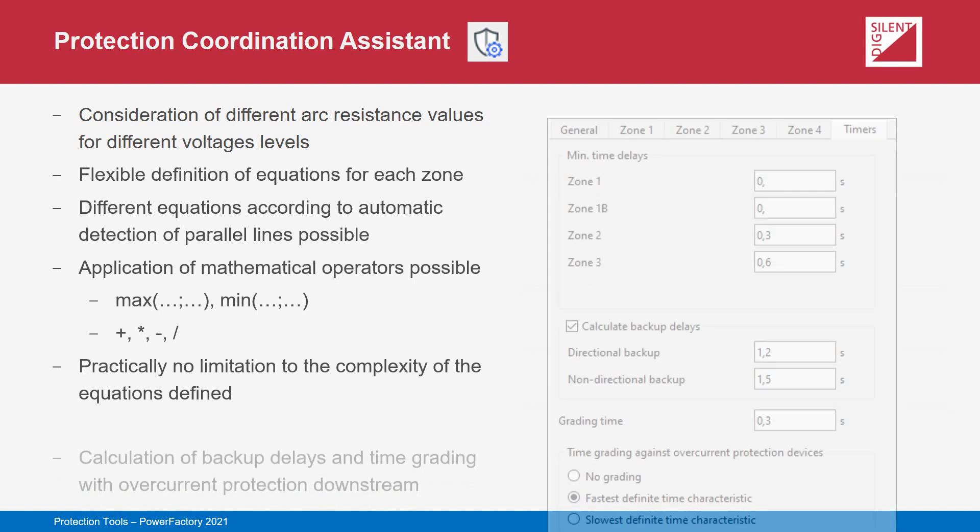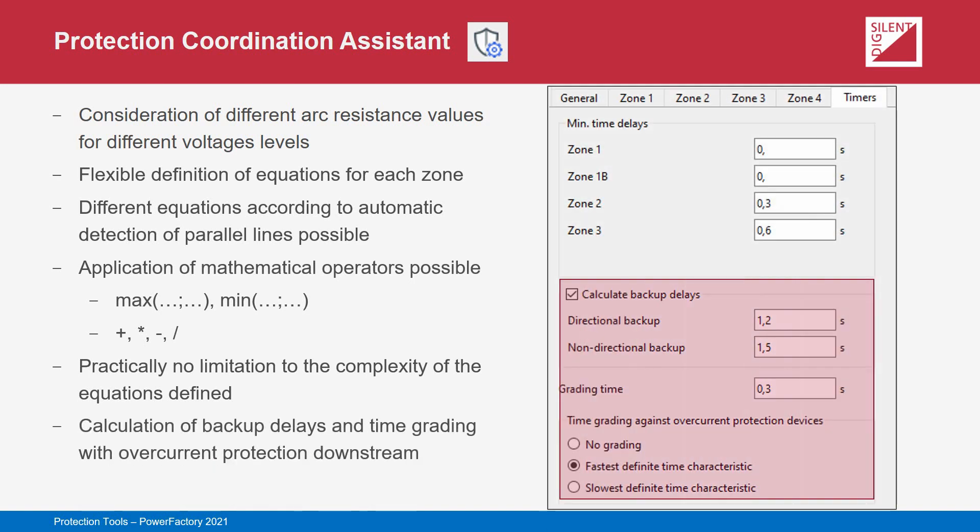Where relays employ directional tripping elements with backup delays or non-directional tripping backup elements — sometimes called starting elements — the time delays for these elements can also be specified. For teed lines supplying a transformer protected by overcurrent protection, specific grading margins for coordination with overcurrent protection can be defined, and the tool will automatically identify cases where this grading time should be applied.